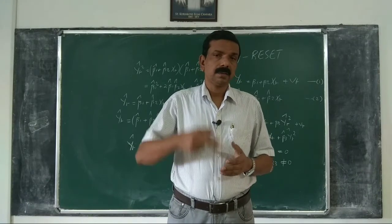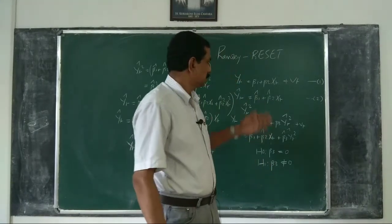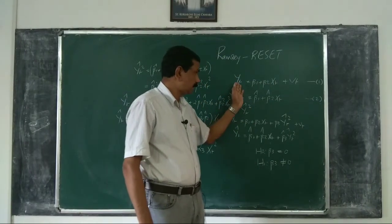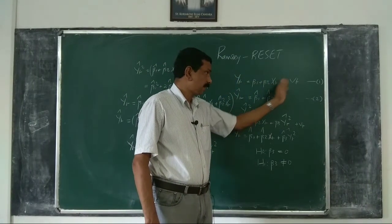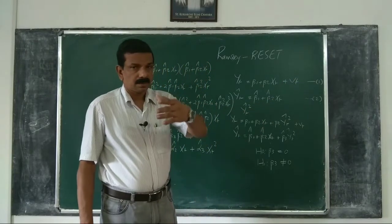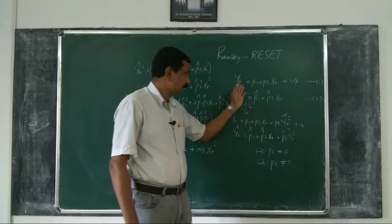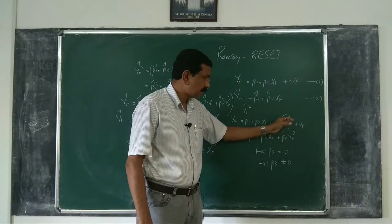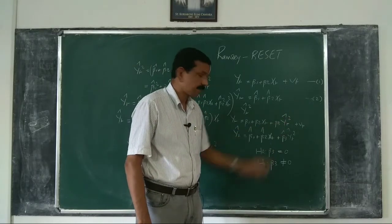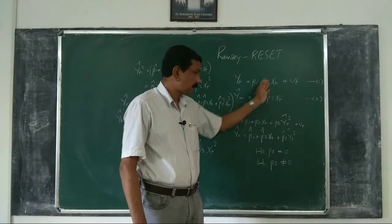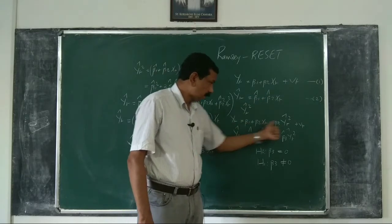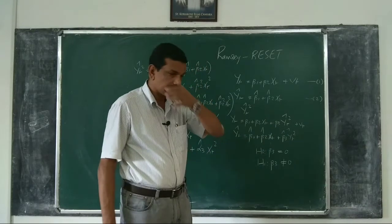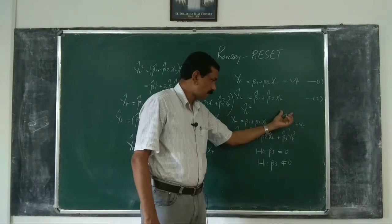Now, suppose that in this model we have introduced only Xt, but Yt actually depends on X₂, X₃, etc. Then the procedure is the same: in addition to X₂, X₃, etc., we add the square of Ŷt — that is, Ŷt². If there are more than one explanatory variable, in the new model all these explanatory variables will be included, and in addition we add Ŷt².